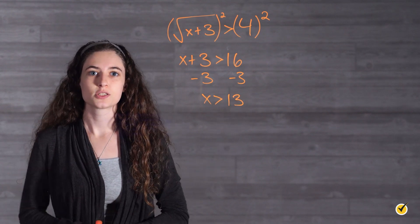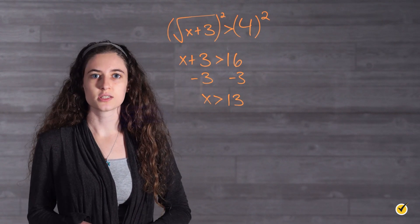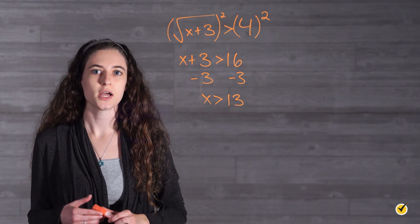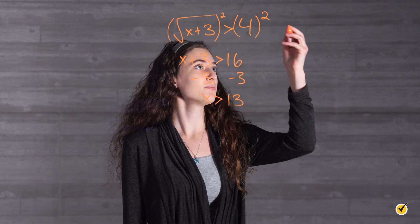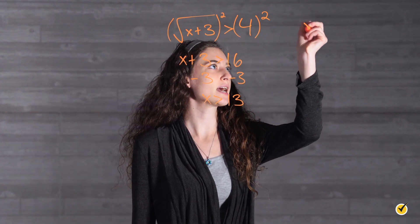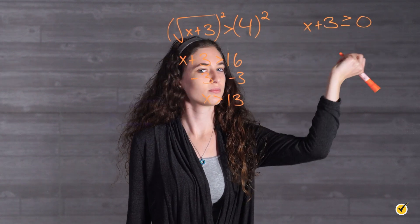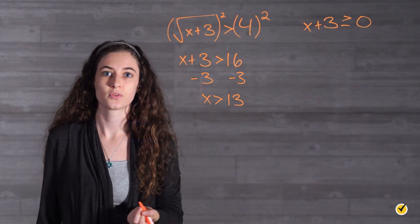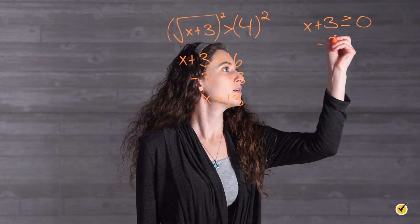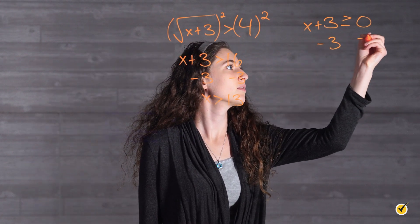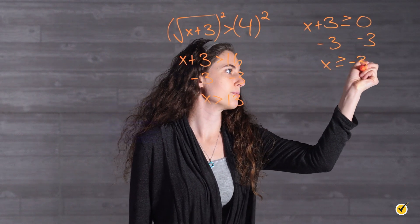Now it's time for our special step. We want to set what is under the radical symbol greater than or equal to 0 and solve for x again. So x plus 3 is under the radical symbol, so we'll set x plus 3 is greater than or equal to 0. Now we're going to subtract 3 from both sides, which gives us x is greater than or equal to negative 3.